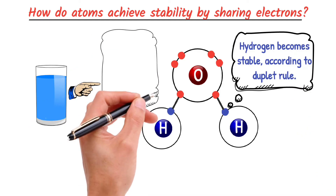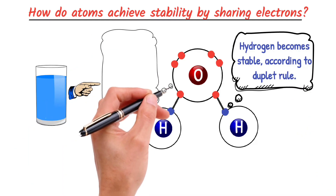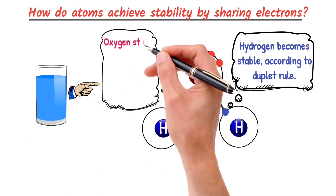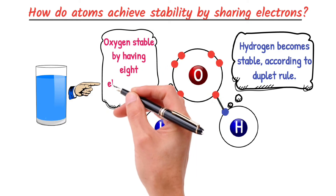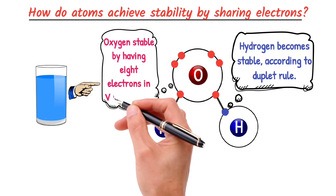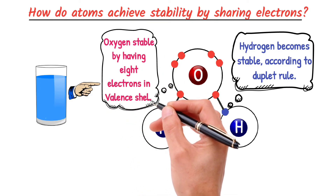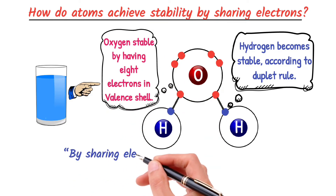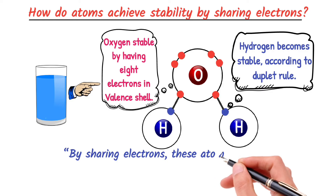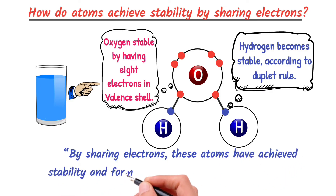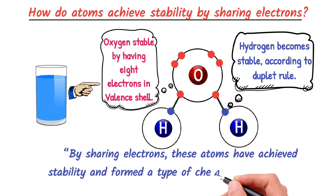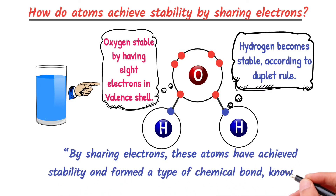On the other hand, oxygen becomes stable by having eight electrons in its valence shell, according to the octet rule. So by sharing electrons, these atoms have achieved stability and formed a type of chemical bond known as a covalent bond.